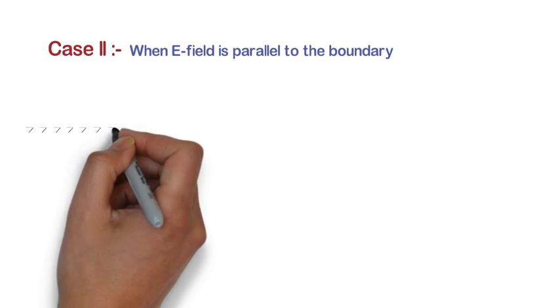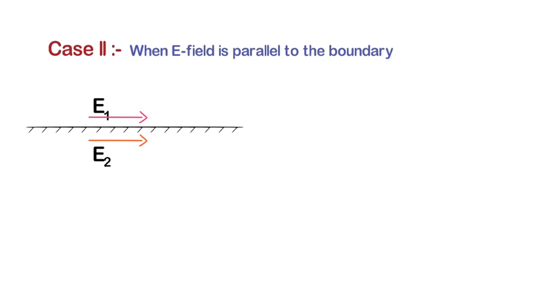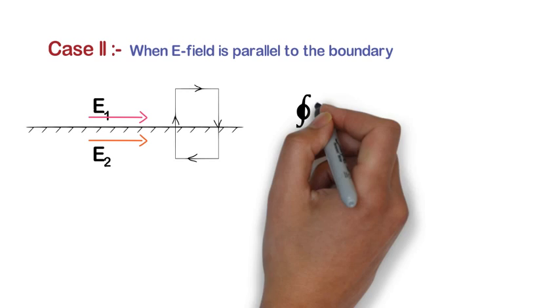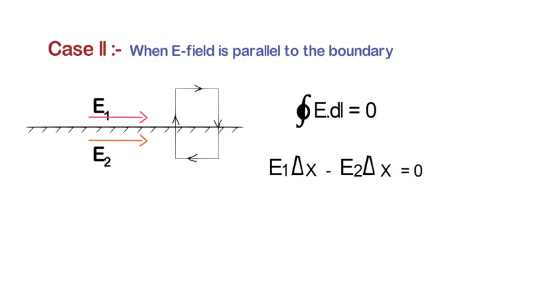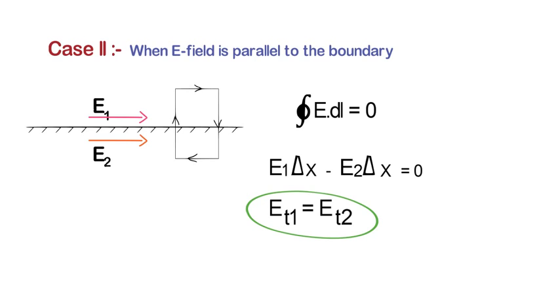Case two: when the electric field is parallel to the boundary. Again we have two media with permittivity ε1 and ε2, where electric fields E1 and E2 in their respective media are both parallel to the interface. Using Maxwell's second equation — the closed line integral of E equal to 0 — over a closed symmetric line, we get E1·ΔX minus E2·ΔX equal to 0. After simplification, ET1 equals ET2, where ET1 and ET2 are the tangential components of electric field in medium 1 and medium 2 respectively. This shows the tangential component of electric field intensity is always continuous.